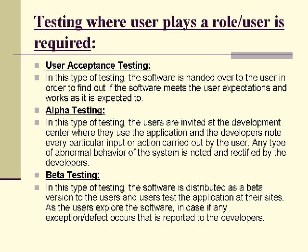Beta testing: in this type of testing, the software is distributed as a beta version to the users, and users test the application at their own sites. As the users explore the software, if any exceptions or application defects occur, they are reported to the developers.